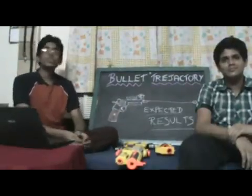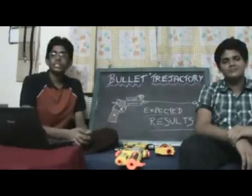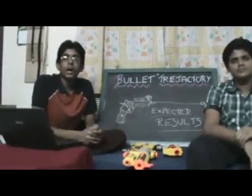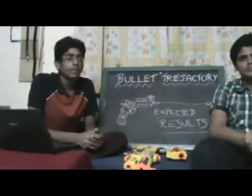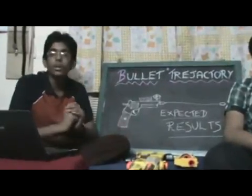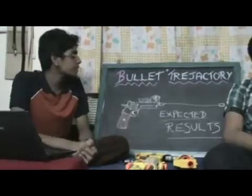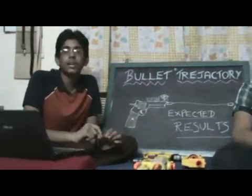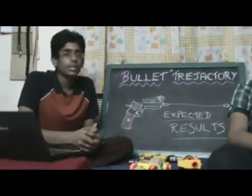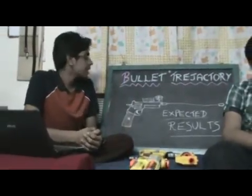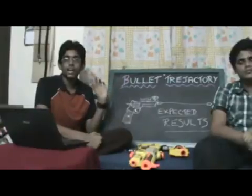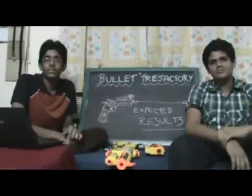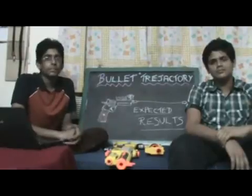Going on to our expected results: the bullet trajectory in outer space is compared with the distance travelled by the bullet under Earth's gravitational pull. When these two are compared, the following effects might take place. Either the distance travelled in space is higher than the distance travelled on Earth — in this case, it does not depend on gravity. If the distance travelled in outer space is equal to the distance travelled under Earth's gravitational pull, it depends.